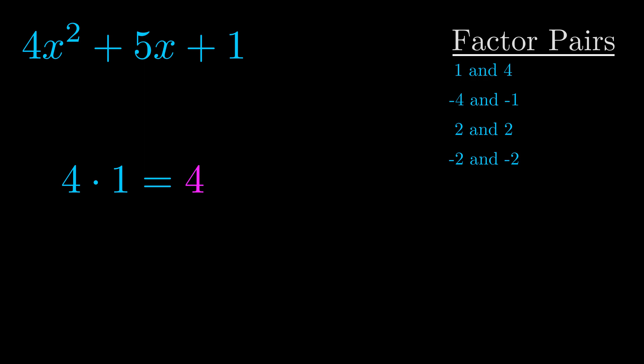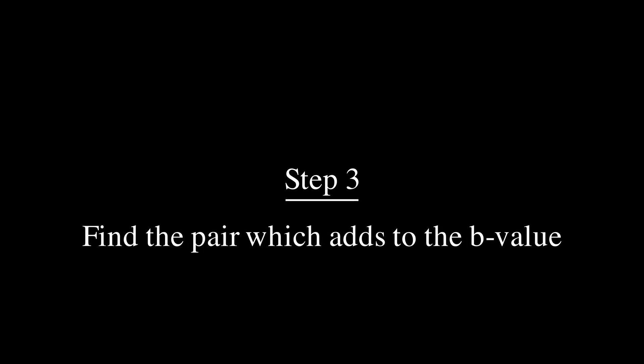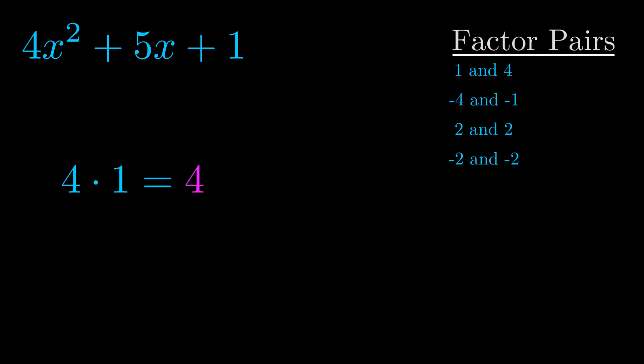Now once you have these factor pairs the goal is to find which of these pairs adds to the b value. The b value is the coefficient on the x term. That's the middle term, the one that we haven't done anything with yet. And really this is the only factor pair that we need.